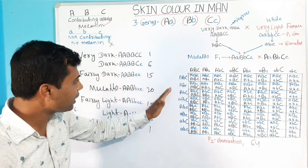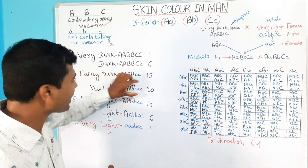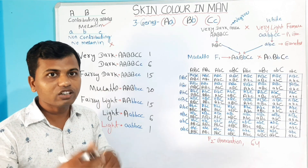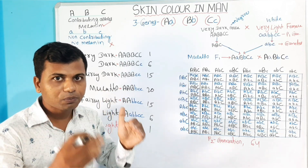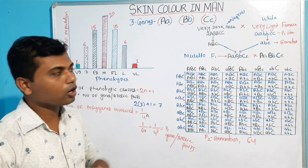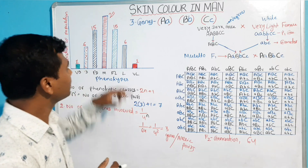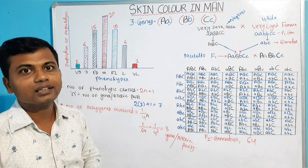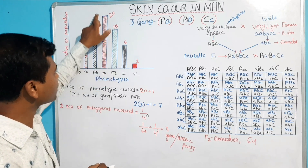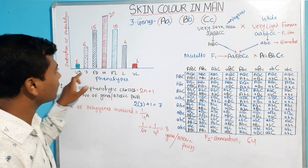Here, we can easily see that the number of individuals showing the intermediate phenotype — that is mulatto — is the maximum. The appearance of more individuals showing the intermediate phenotype is the characteristic feature of Polygenic Inheritance or quantitative inheritance. This histogram of skin color of human shows Polygenic Inheritance, where the number of individuals showing the intermediate phenotype (mulatto) is maximum as compared to individuals showing the parental phenotypes of very dark and very light.